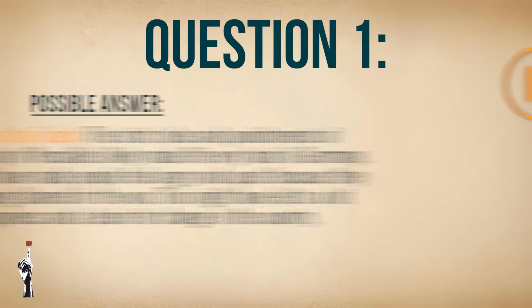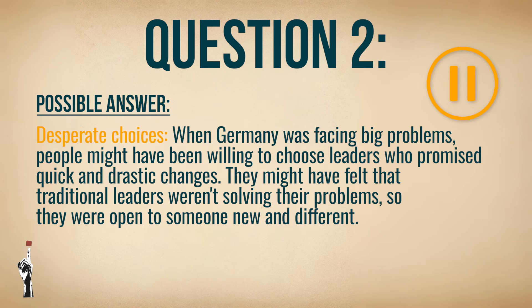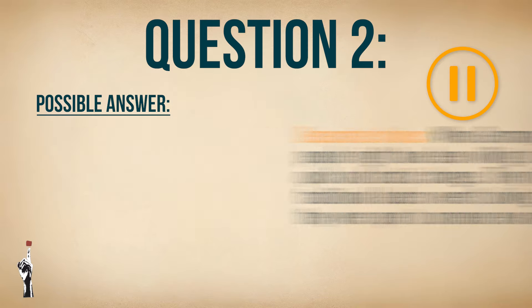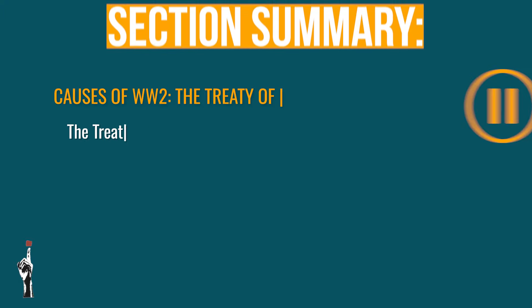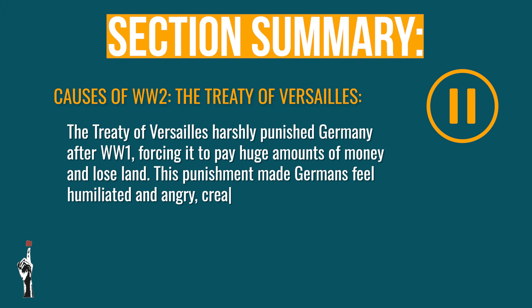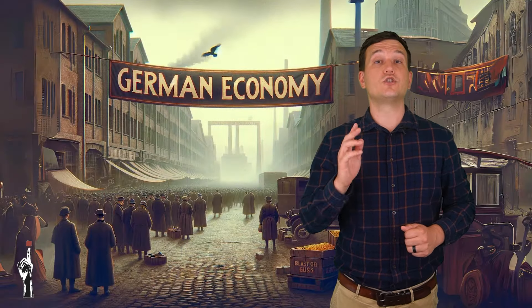Here are some possible answers for the questions that were raised. So we've dealt with the Treaty of Versailles and now we're going to move over to other important reasons for the outbreak of the war, starting with Germany's economy after World War One.